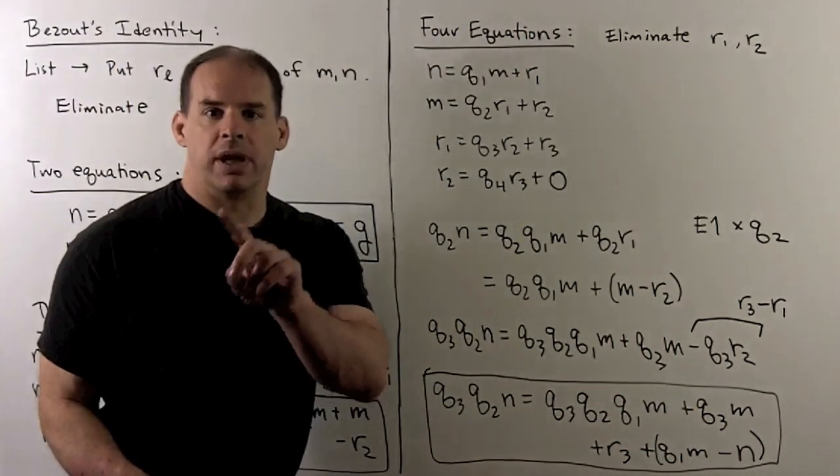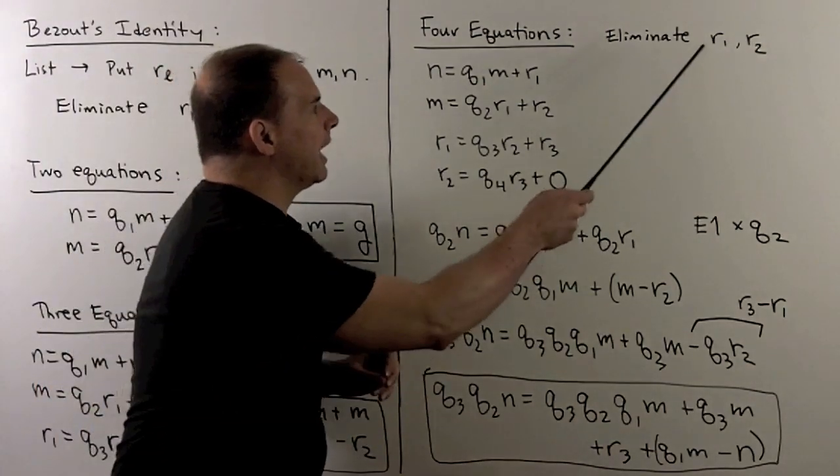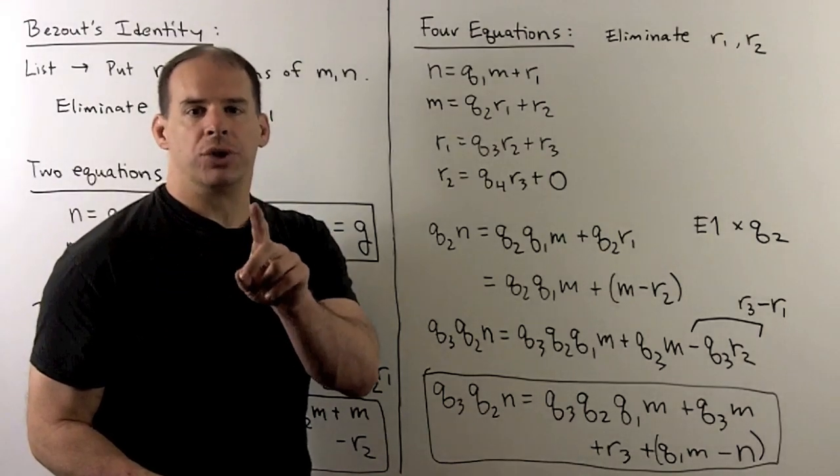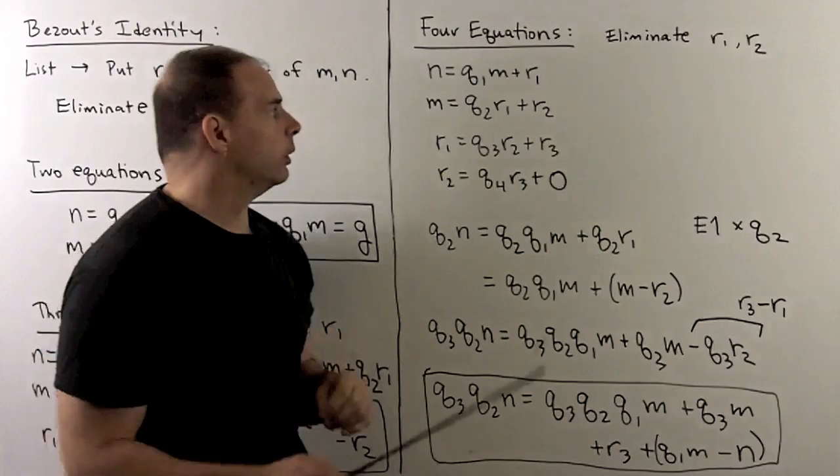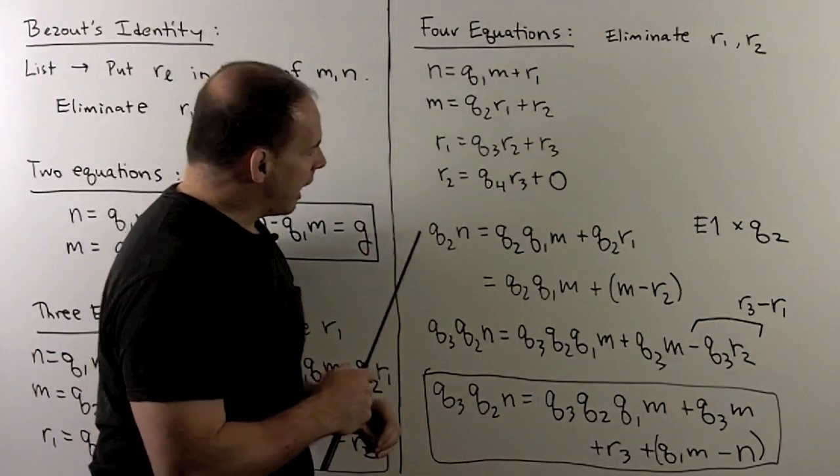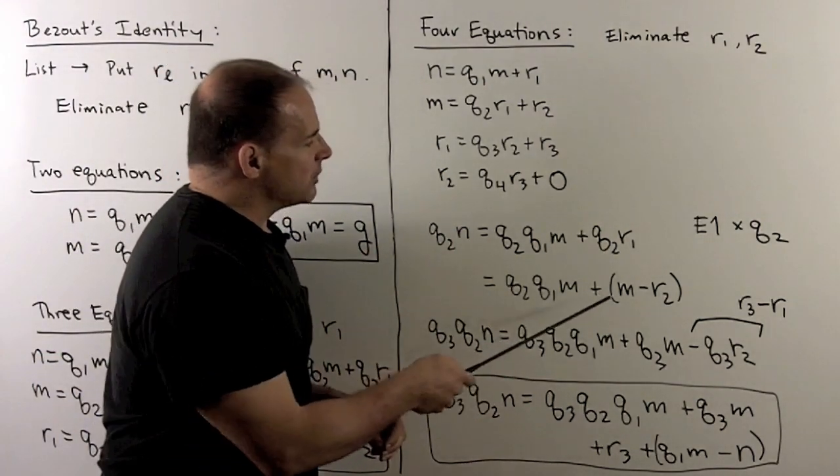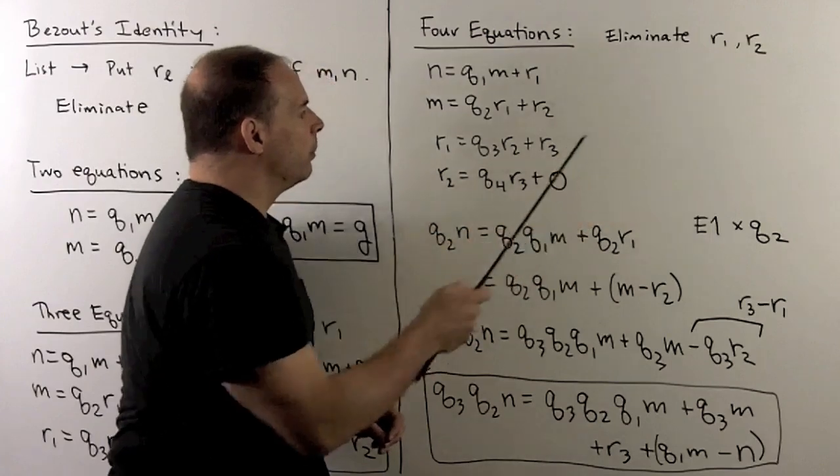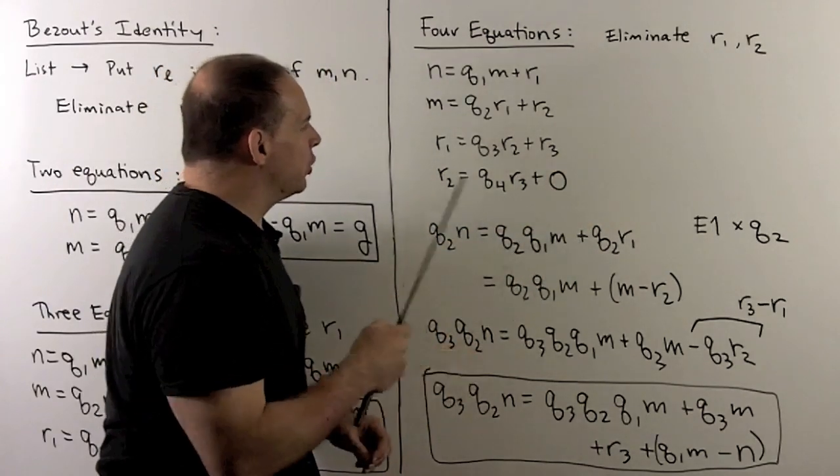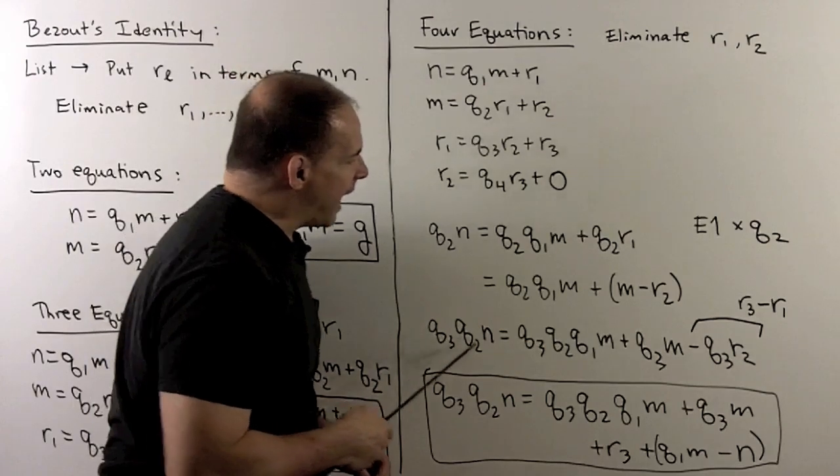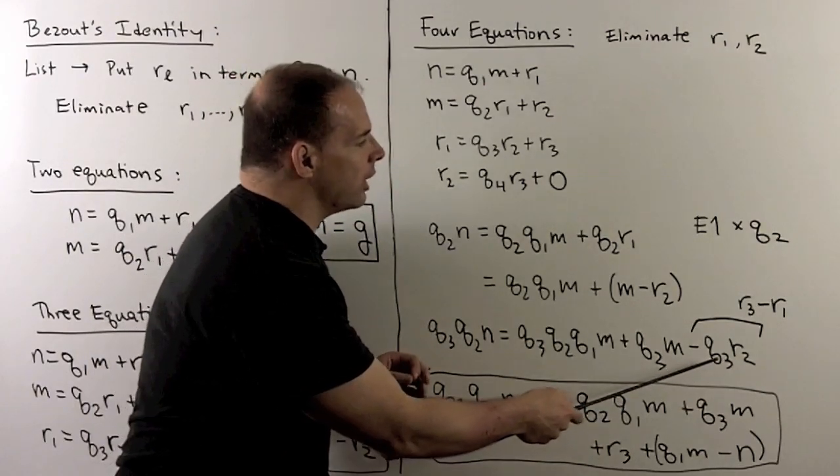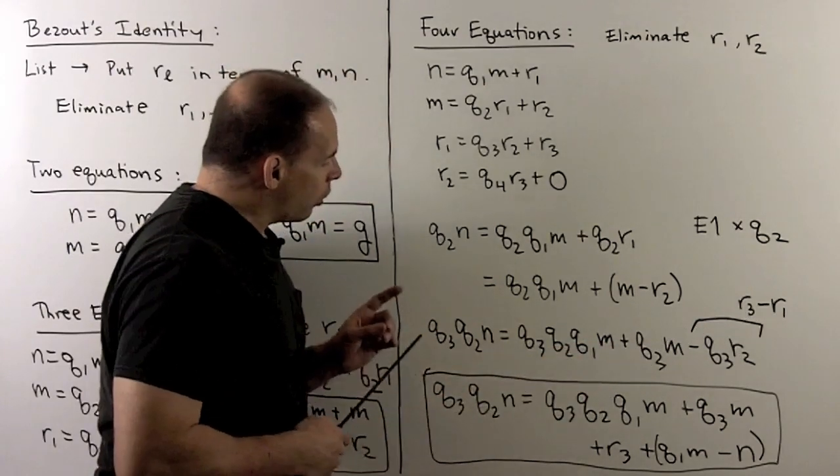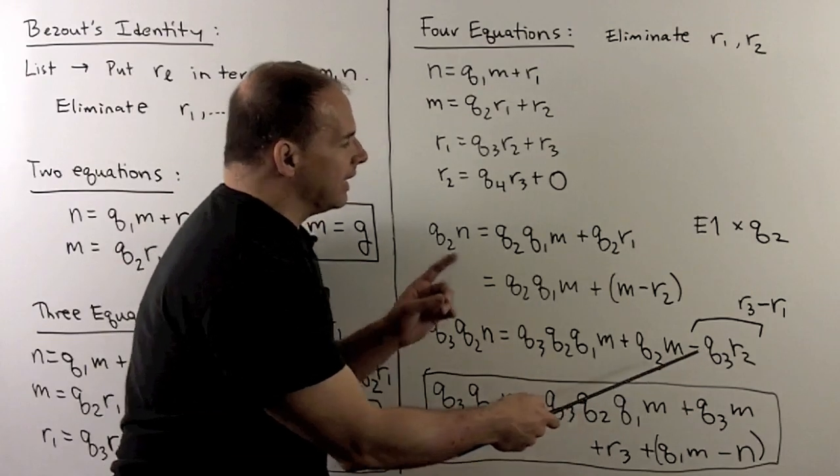For four equations, this is the case of our example. I want to eliminate r1 and r2. So, same idea as before. First, we go after r2 by multiplying the first equation by q2. Now, we write it out as before, and then I substitute q2r1 with m minus r2. I want to get rid of r2. So, we're going to multiply this new equation by q3. We work that out. Then we know we can substitute the q3r2, which now is a minus sign, with r3 minus r1. We're almost there.